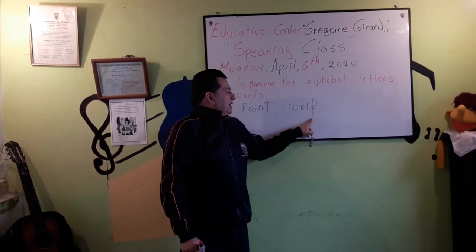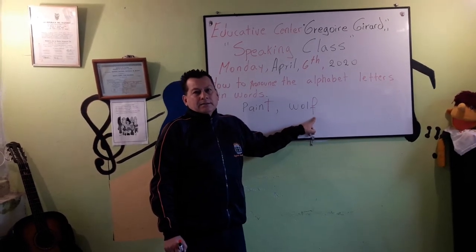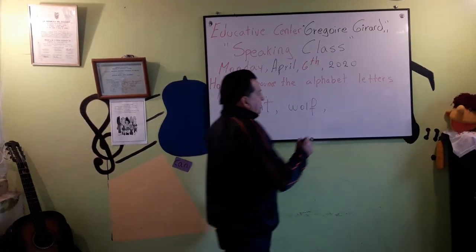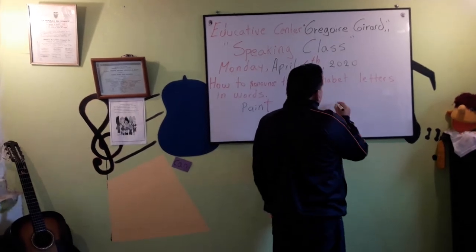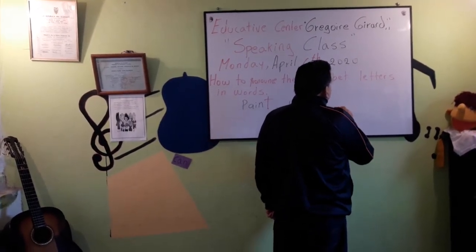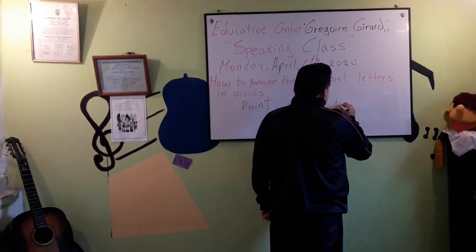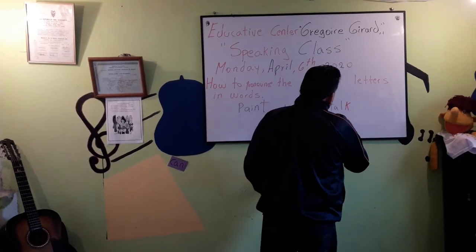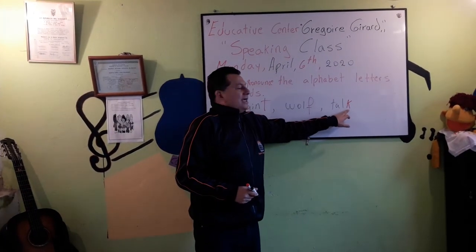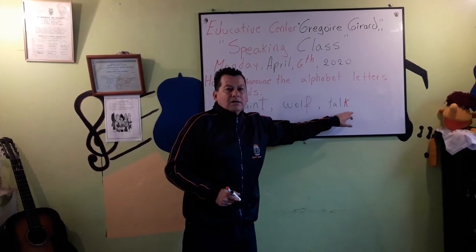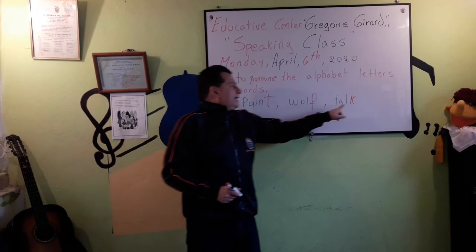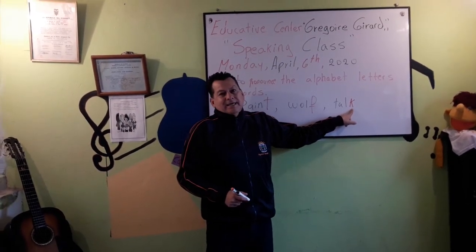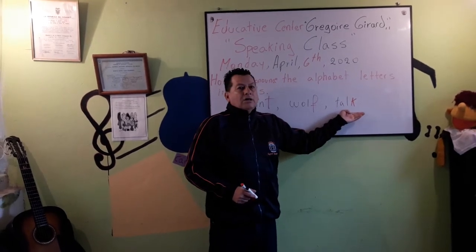Paint. Wolf. So you have to pronounce the consonant at the end. Another word, for example, let's say church. Or talk. Let's write this one — talk. Over here you have K. Talk. So you have to pronounce the consonant. Talk.